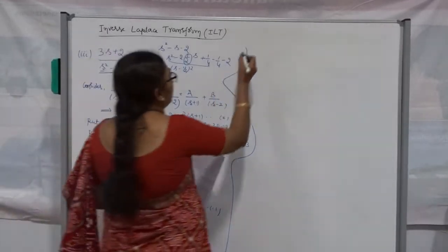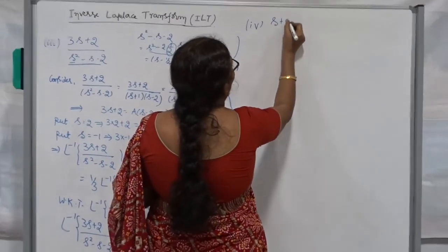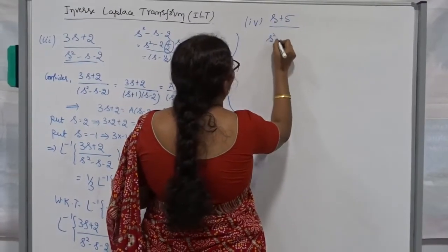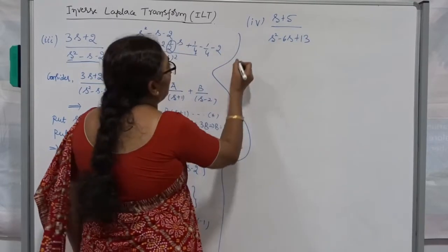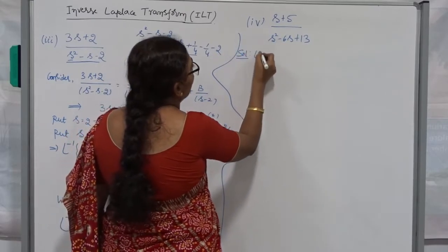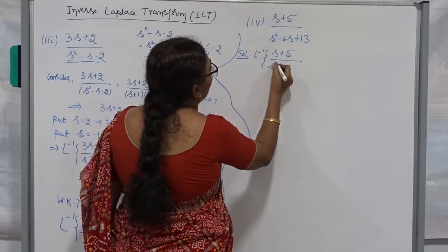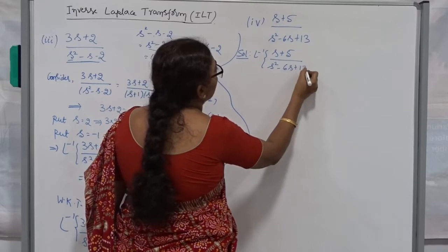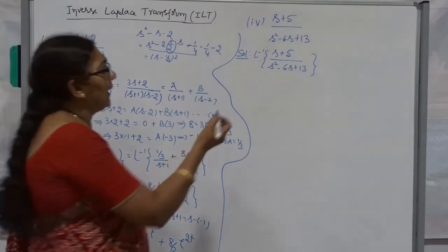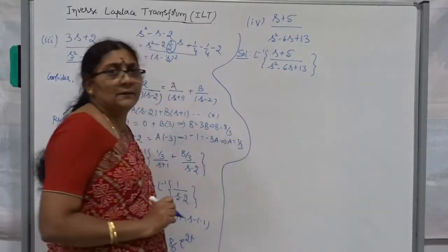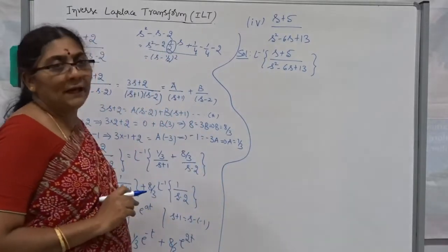Now I am going to take one more problem. The fourth problem is: (s + 5) divided by (s² − 6s + 13). I want to find the inverse Laplace transform of (s + 5)/(s² − 6s + 13). Here, I am not going to use the factorization method — we can't factorize 13. We can't convert s² − 6s + 13 into the form of a product of two linear factors.